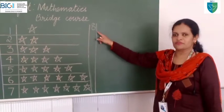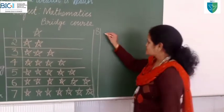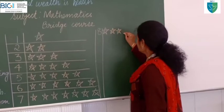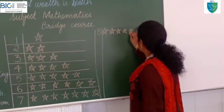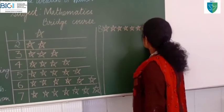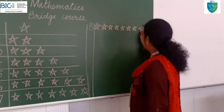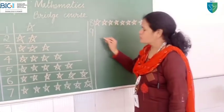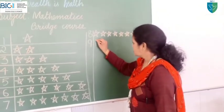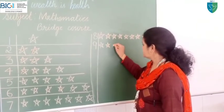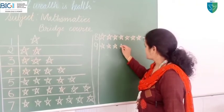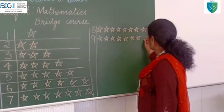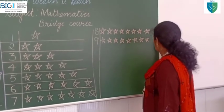Now, the next number is eight — let me show you. Eight stars: one, two, three, four, five, six, seven, eight. Now the number is nine — the biggest one-digit number: one, two, three, four, five, six, seven, eight, nine.